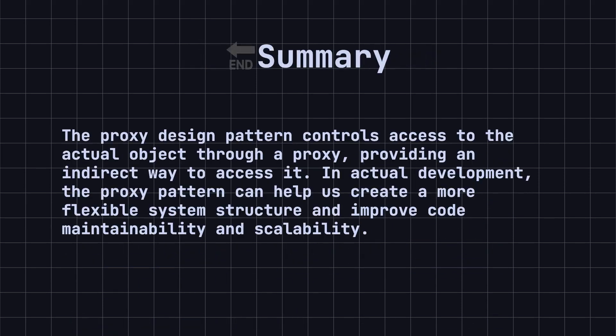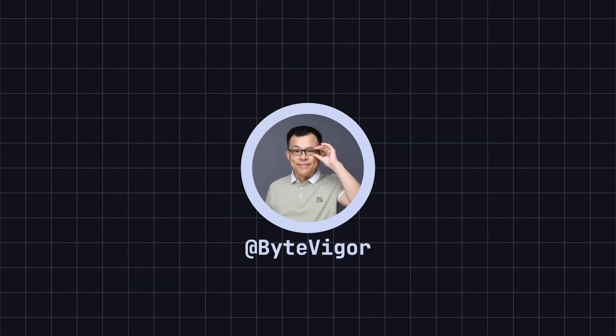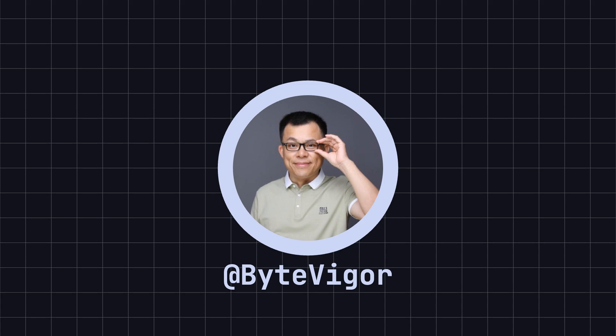Finally, let's summarize today's lesson. The proxy design pattern controls access to the actual object through a proxy, providing an indirect way to access it. In actual development, the proxy pattern can help us create a more flexible system structure and improve code maintainability and scalability. Thank you for watching today's video. If you found this video helpful, please like it and subscribe to the ByteVigor channel so you won't miss more exciting content. See you in the next video.